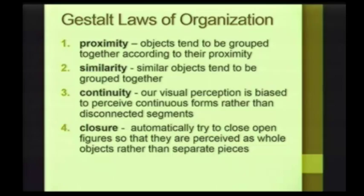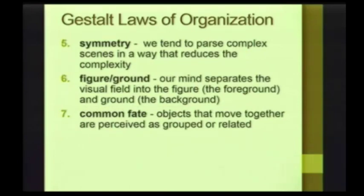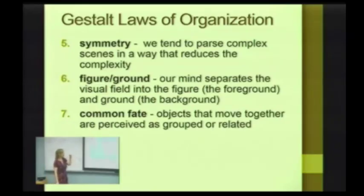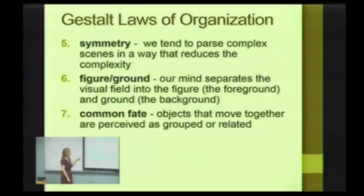Then there's closure: we automatically try to close open figures so that they are perceived as a whole object rather than as separate pieces. A lot of times continuity and closure go together. There's symmetry: we tend to parse complex scenes in a way that reduces complexity — we want to interpret things quickly, so we simplify them. Figure-ground: our mind separates the visual field into the figure, which is the foreground, and the ground, which is the background. And common fate: objects that move together are perceived as grouped or related.